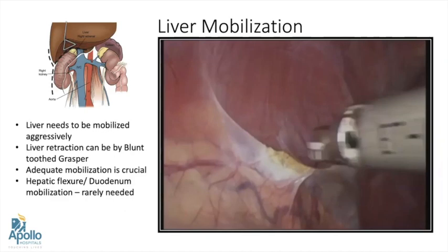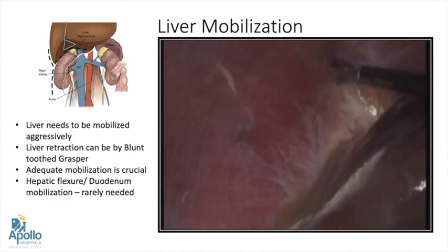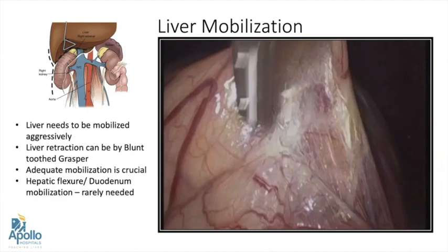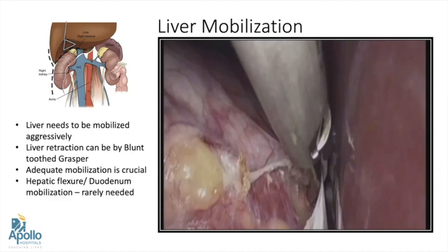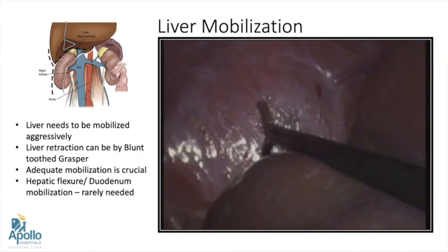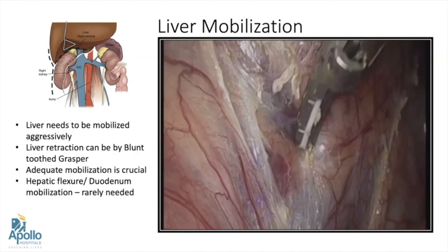The first step after inserting the port is liver mobilization and we need to mobilize the liver aggressively. All the triangular attachments on the liver should be taken care of. The liver can be retracted with the help of a blunt grasper. The peritoneum over the mass is opened at the junction between the mass, kidney, and the IVC — a triangular junction. All the peritoneum over the mass should be excised using an electrosurgical instrument up to the lateral border.